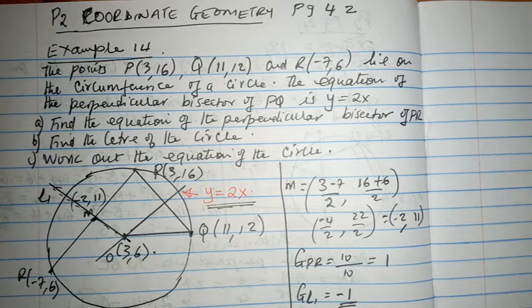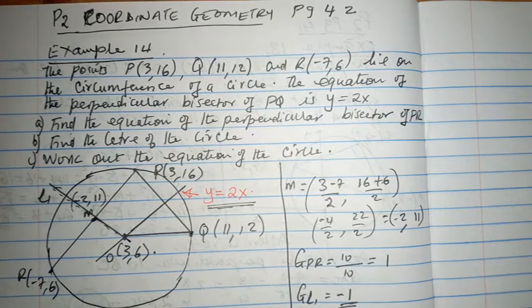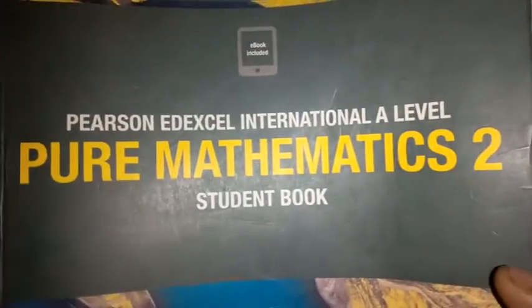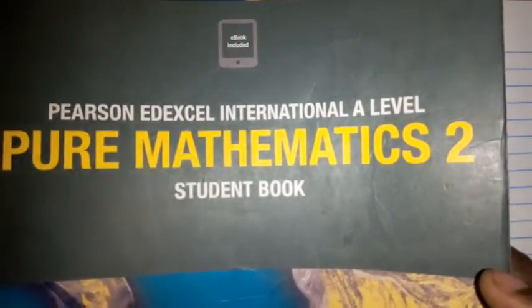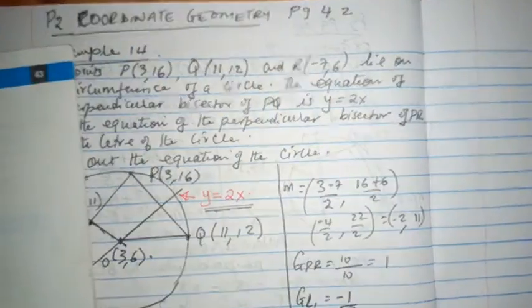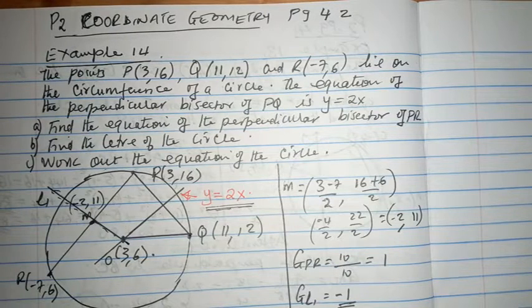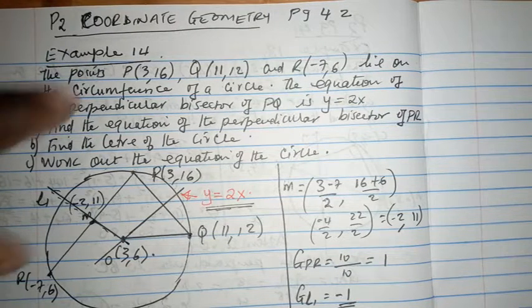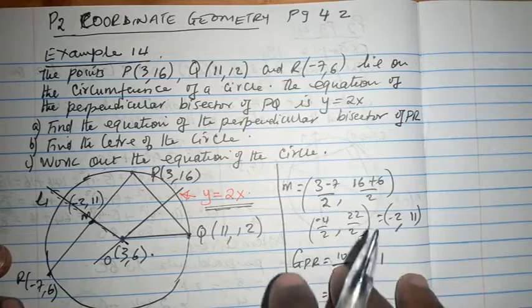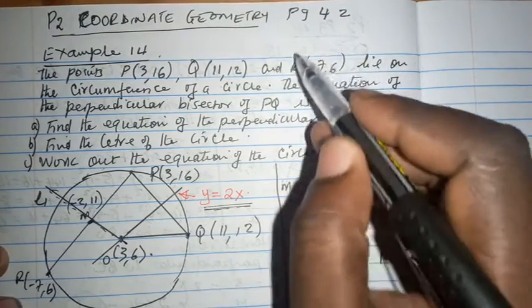Good morning and once again welcome to my YouTube channel, Pearson and Excel International Maths by Musa Kamoto. In this video I will be explaining the very last example of Pure Mathematics 2 International Advanced Level, dealing with topic number 2, the very last example: Coordinate Geometry. And we are on page 42.